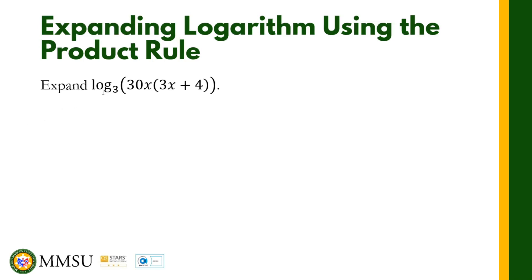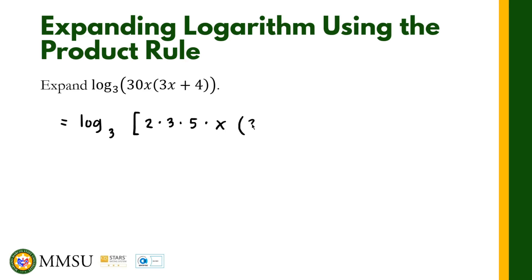Let us try to apply this rule in the following example. We want to expand the logarithm in base 3 of 30x times (3x + 4). As you can see, we need to find the prime factors of 30x times (3x + 4). The prime factors of 30 are 2, 3, and 5. So we can rewrite this as the logarithm in base 3 of 2 times 3 times 5 times x times (3x + 4).